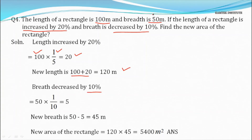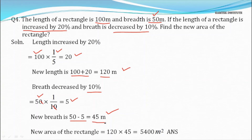For the breadth: 50 m decreased by 10%. 10% = 1/10, so 50 × 1/10 = 5 m decrease. New breadth = 50 − 5 = 45 m. New area = length × breadth = 120 × 45 = 5,400 m².